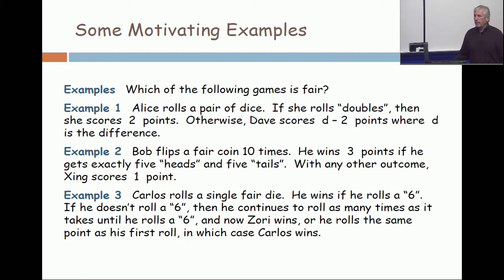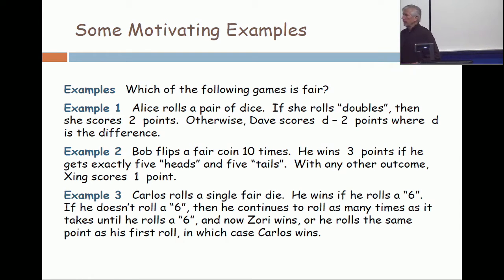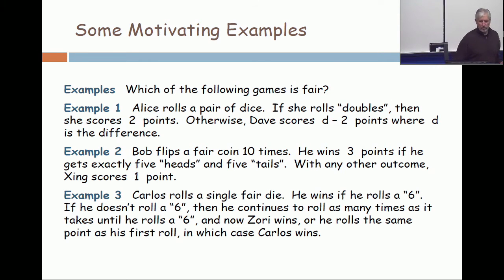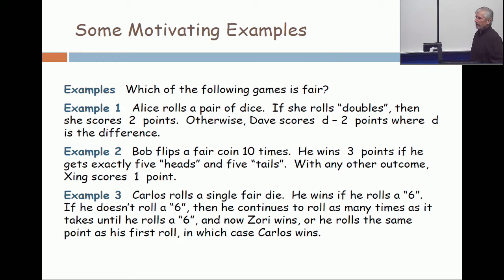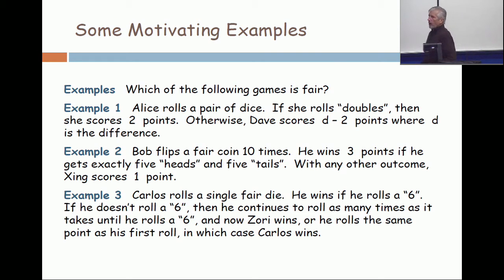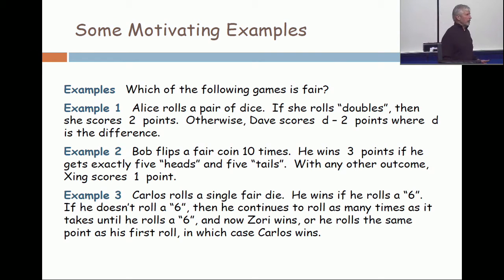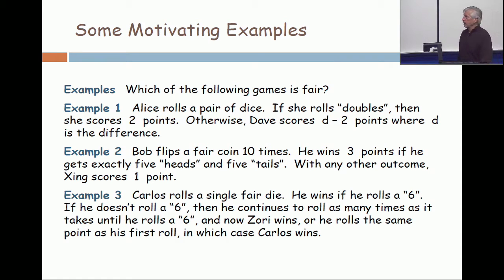Example two. Bob flips a fair coin ten times. He wins three points if it splits the way you'd expect — five heads, five tails. But if there's any other outcome, like six and four, seven and three, eight and two, nine and one, or all ten, then Ching wins one point.